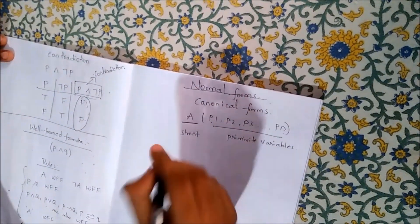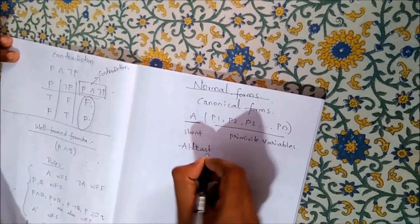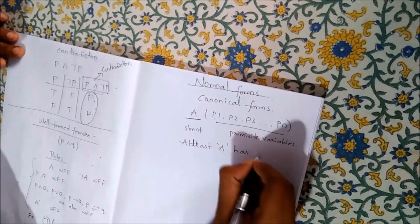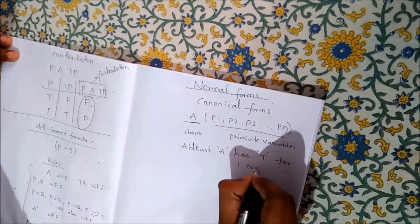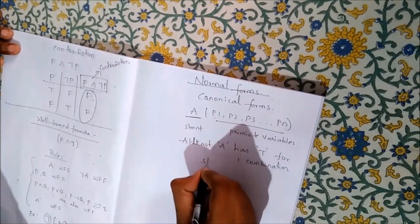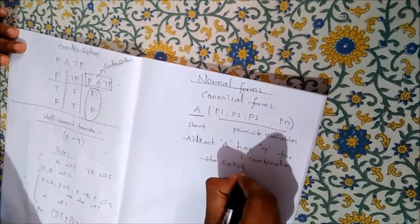At least one combination where A has true for one combination, that means it is satisfiable.